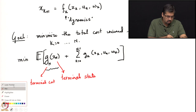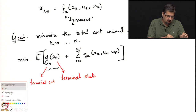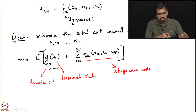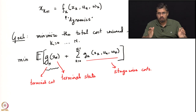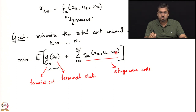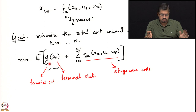The other terms in the cost are costs associated with every time step — these are called stage-wise costs. The total cost is a sum of costs incurred at every stage from 0 to N minus 1, each depending on the state, the action taken, and a random effect due to noise, plus the terminal cost which depends on the final state at the end of the time horizon. Minimizing this total cost is the definition of the problem.